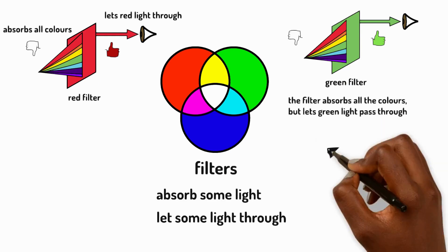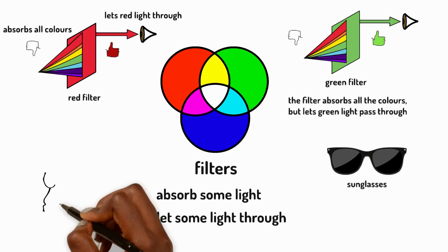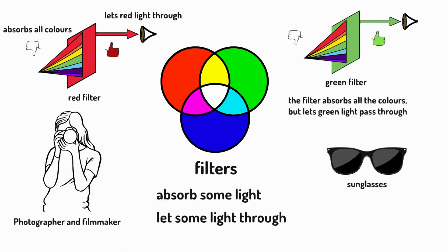These filters can be used in sunglasses, filtering out certain colours and also some ultraviolet light, reducing the harm that can be caused by the sun's rays. Photographers and filmmakers also use filters to change the mood and feel of their shots.